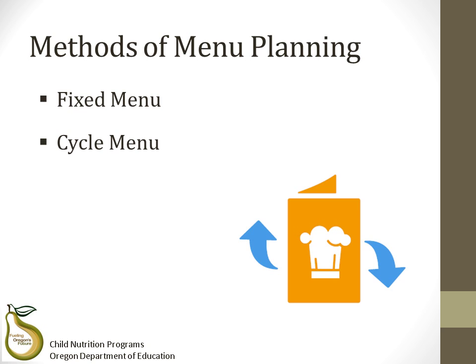There are two common menu planning methods used in child nutrition programs: fixed and cycle. A fixed menu is defined as a menu which is not subject to change — it is stable. Usually you see a single menu for several months. It could be a series of menus repeated over a specific time period, or the same menu for a specific period, such as a week or month. This menu is designed for participants who do not eat at an operation frequently, such as residential child care institutions (RCCIs) or drop-in daycare.